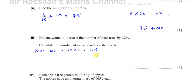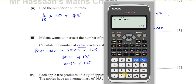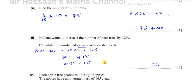She wants to increase the number of pear trees by 32%. The question says calculate the number of extra pear trees she wants — they're not asking for the increased amount, just the extra amount. So you have to find 32% of 175, which is 0.32 times 175. Because they're not asking for the increased amount, just the extra amount, you've got to be very careful — that's going to give you 56 trees.